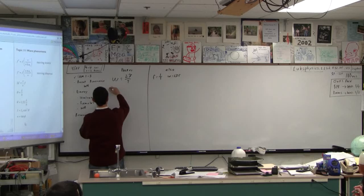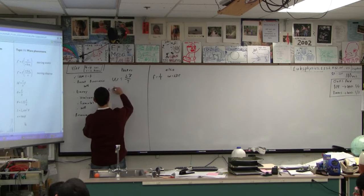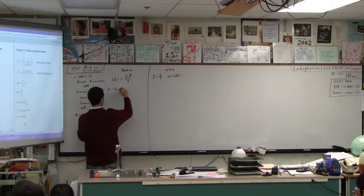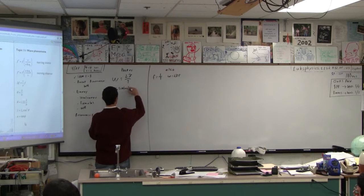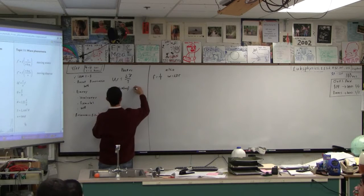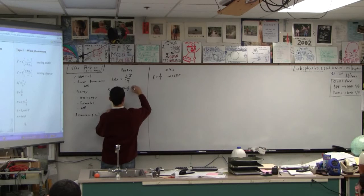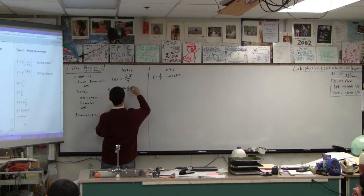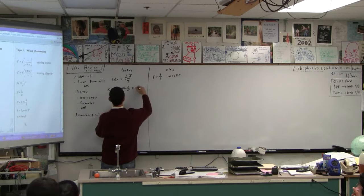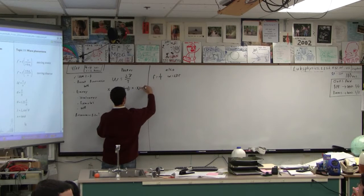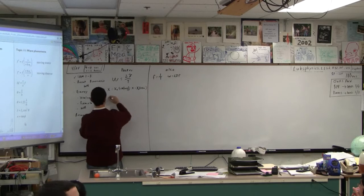And then we've got this family of formulas where the position is the amplitude times sine omega t. Or x is... I'll put a comma there. X could also be x₀ cos(ωt).